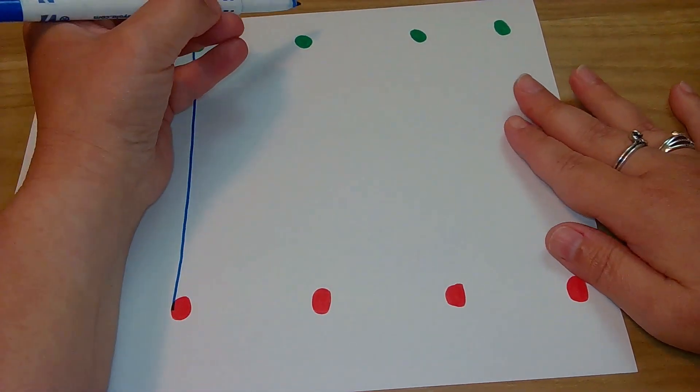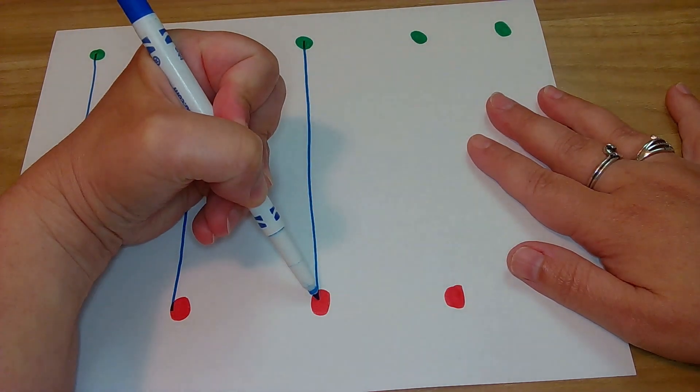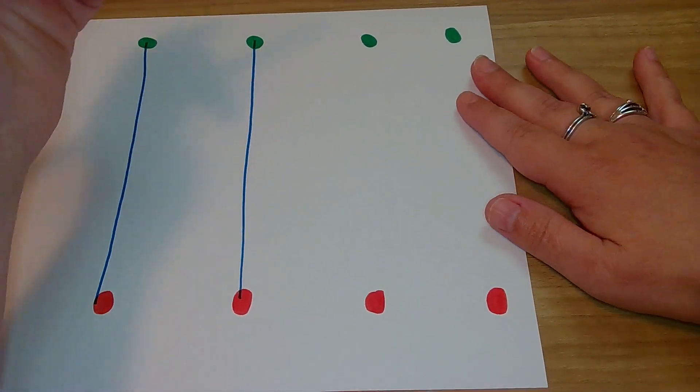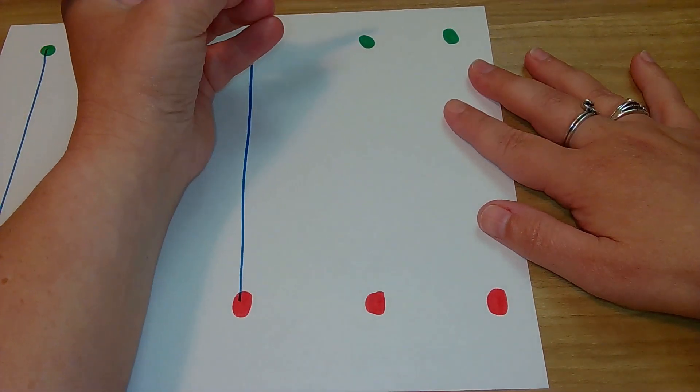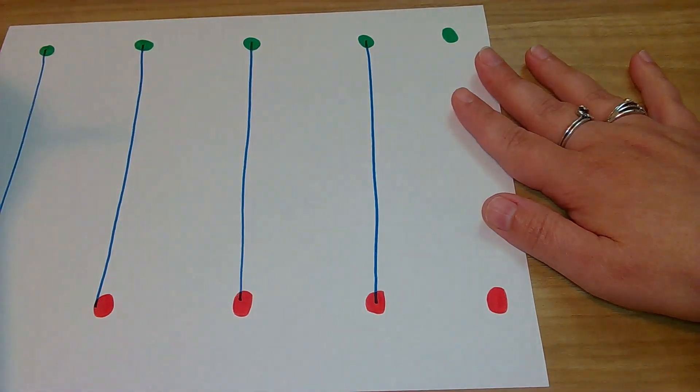Okay, here we go. On green dot. Go. Big line down. Yes. Okay, we've got two more. We can do it. On green dot. Go. Big line down. Yes.